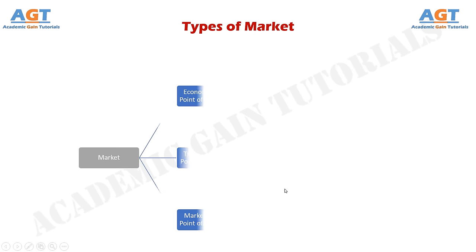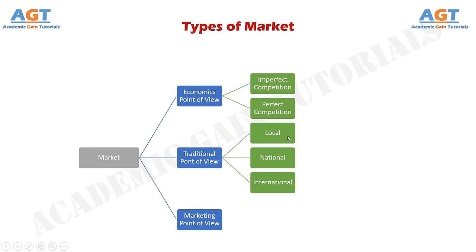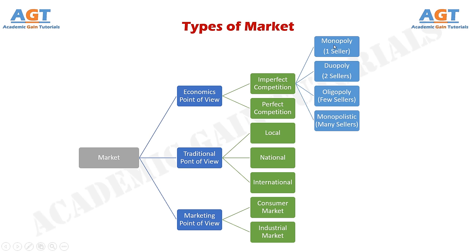Types of market: market can be classified based on the economics point of view, traditional point of view, and the marketing point of view. Based on economics, market is classified based on imperfect and perfect competition. Based on the traditional point of view, market can be classified as local, national, and international market. Based on the marketing point of view, market can be classified as consumer market and industrial market. Based on imperfect competition, market can be classified as monopoly (one seller), duopoly (two sellers), oligopoly (few sellers), and monopolistic (many sellers).